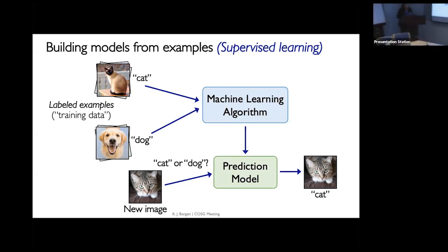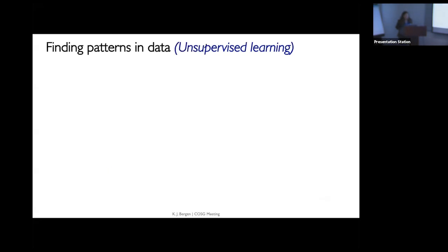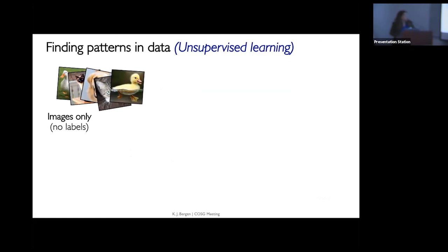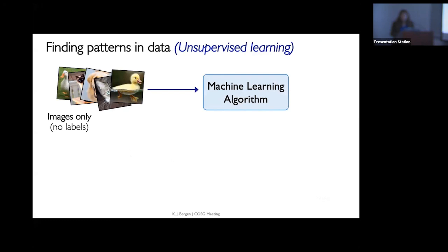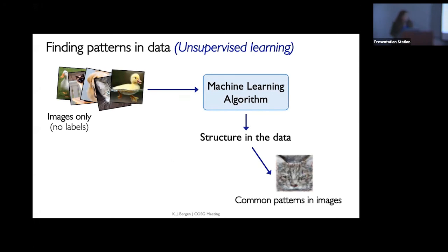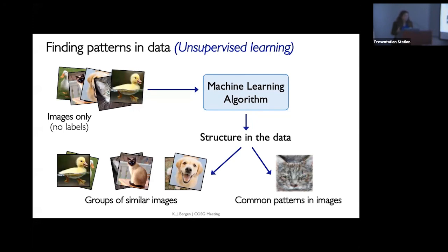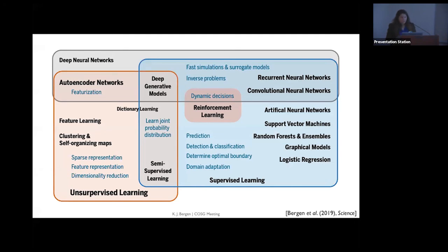You can also do machine learning even when you don't have labeled data — this is called unsupervised learning, and a lot of data mining techniques fall under this category. This is useful especially in geosciences where we often have large unlabeled data sets. You can feed data into a machine learning algorithm and it will return some sort of structure — common patterns or features, or groups of data points that are similar to each other. Deep learning is a type of machine learning that can be used for both supervised and unsupervised learning, but there's a lot more to machine learning than just deep learning.